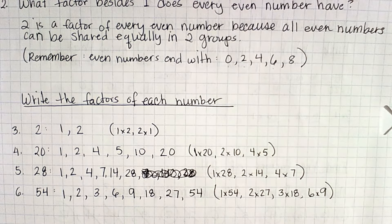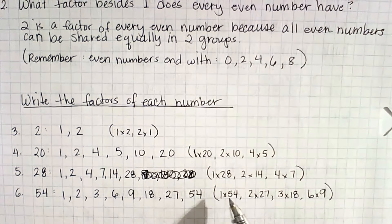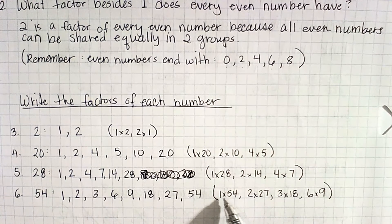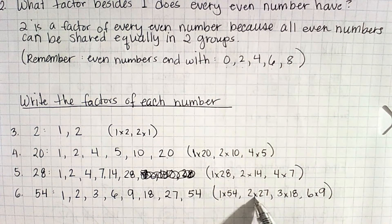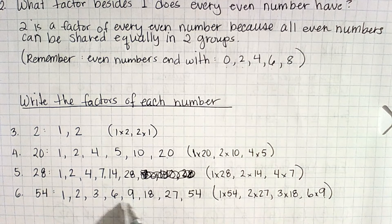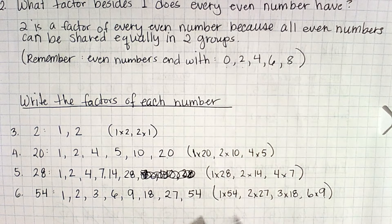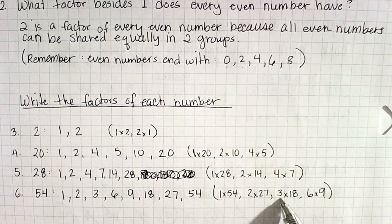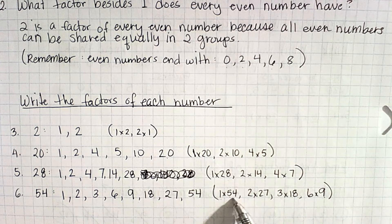For the factors of 54, I listed all the ways to make 54: 1 times 54, 2 times 27, 3 times 18, or 6 times 9. Listed in order, the factors of 54 are 1, 2, 3, 6, 9, 18, 27, and 54.